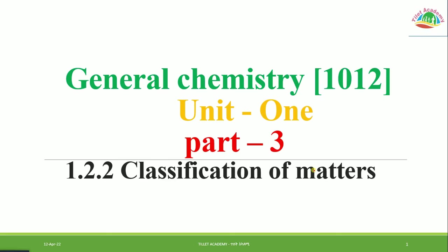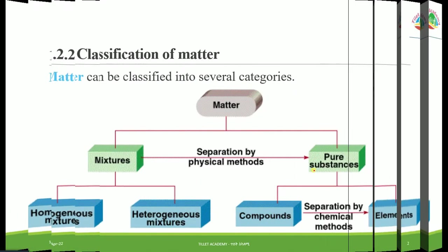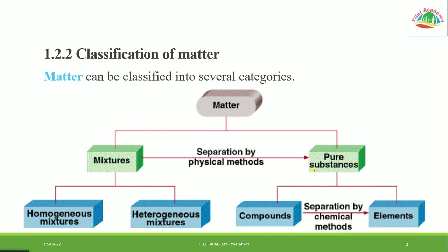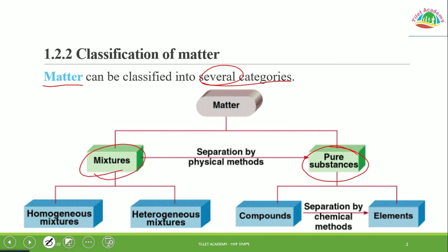Classification of matter — matter can be classified into several categories. From those several categories, matter can be classified into two broad categories: pure substance and mixture. Pure substance is also classified into two: element and compound. Mixture is also divided into two: homogeneous mixture and heterogeneous mixture.